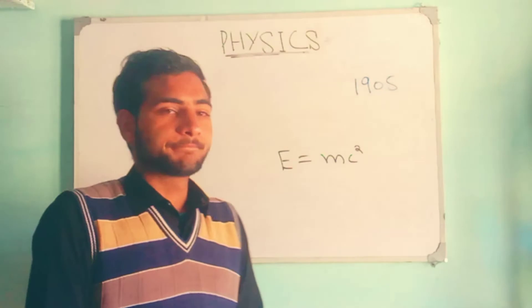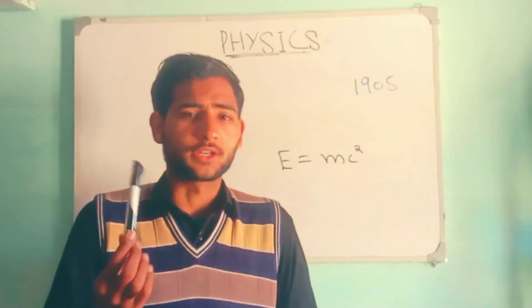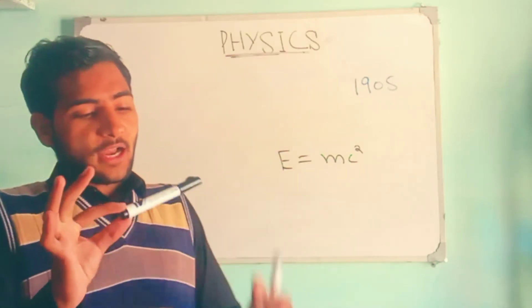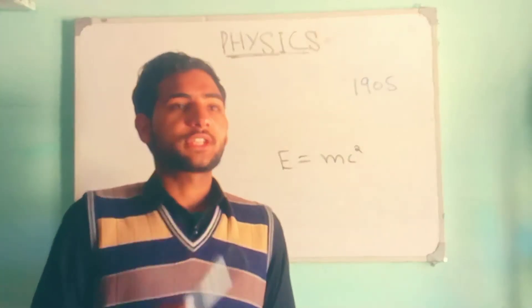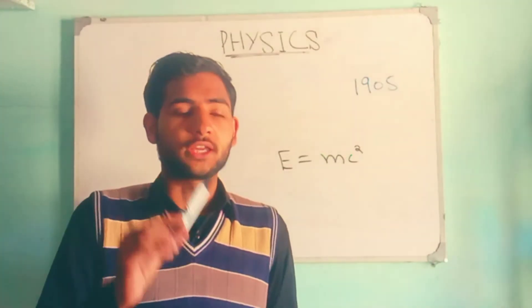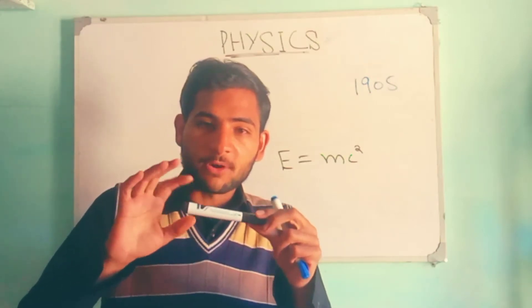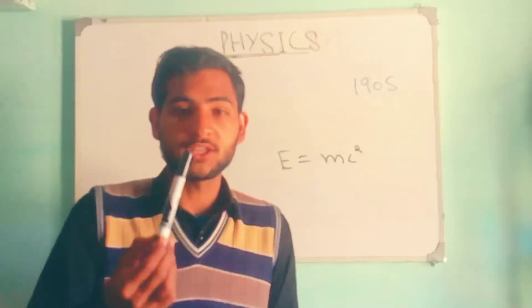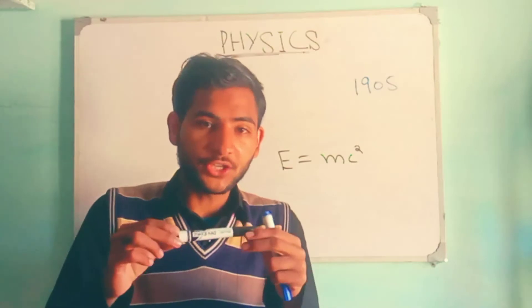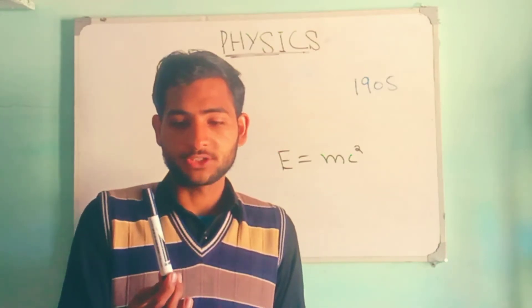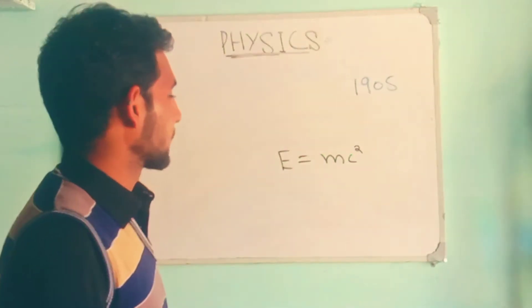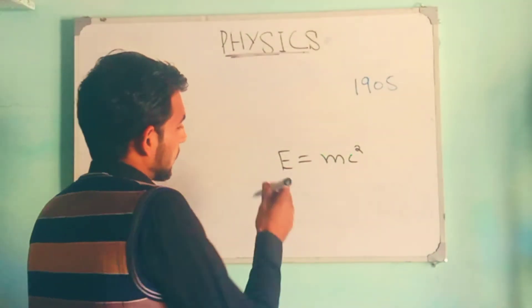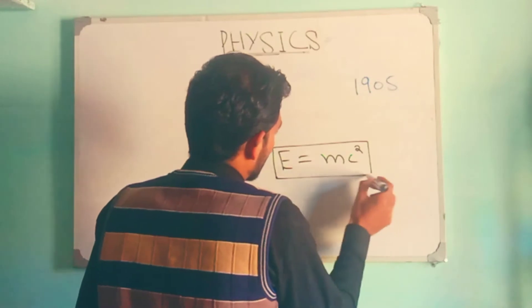According to Einstein, mass is actually nothing - this is energy. This mass is the condensed form of energy. It is another form of energy which we call condensed form. When we need it, we can change it to another form.